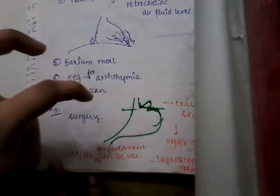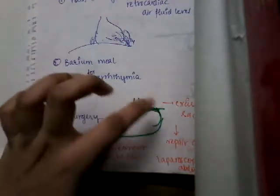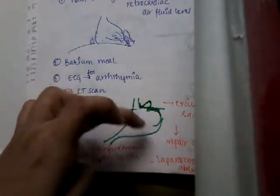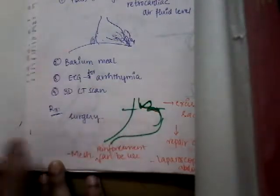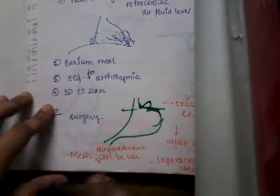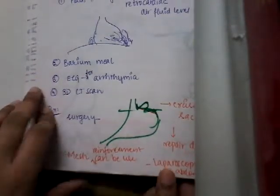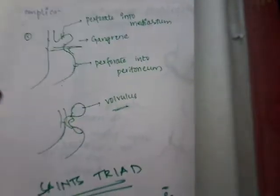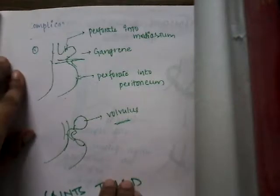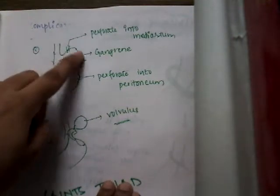The treatment of hiatus hernia is primarily surgical. During surgery, the hernia sac is excised and the defect is repaired. If the sac is very large with a high risk of recurrence, a mesh replacement technique is used. Surgery can be performed either laparoscopically or via open abdominal method.